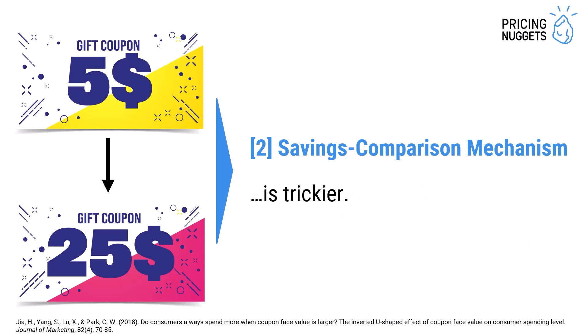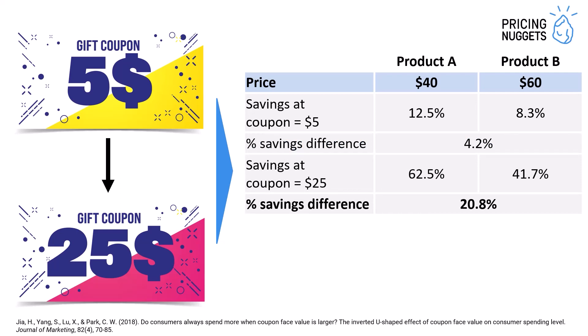The second mechanism is the savings comparison mechanism, and this is a bit trickier. Let us look at a concrete example. Imagine you have two different products: Product A for $40 and Product B for $60, and your coupon can be redeemed for any of these products. With a $5 coupon, your relative savings for Product A are 5 divided by 40, which is 12.5%, and for Product B it's 8.3% — a savings difference of 4.2 percentage points. Now if you increase the coupon value to $25, all of a sudden you save 62.5% for Product A and 41.7% for Product B, and the savings difference in percentage points is almost 21%.